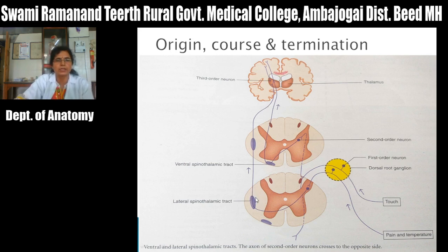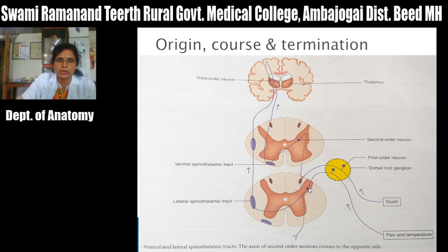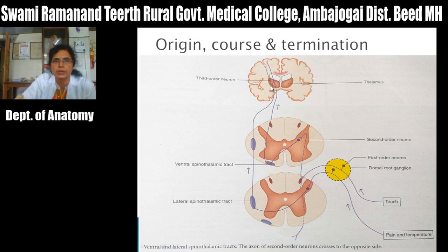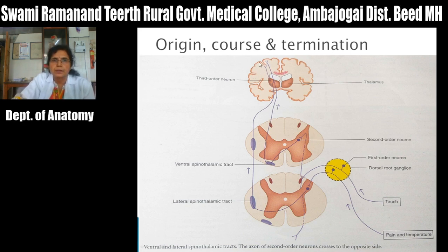The lateral spinothalamic tract is formed by efferents of neurons situated in the dorsal horn of the spinal cord, mainly in laminae 1, 4, 5, and 6. This tract ascends upward through the medulla, pons, and midbrain, and relays in the ventral posterolateral nucleus of the thalamus. These are the third order neurons. Fibers then project to the primary sensory cortex through the posterior limb of the internal capsule, where there is perception of pain and temperature sensation.